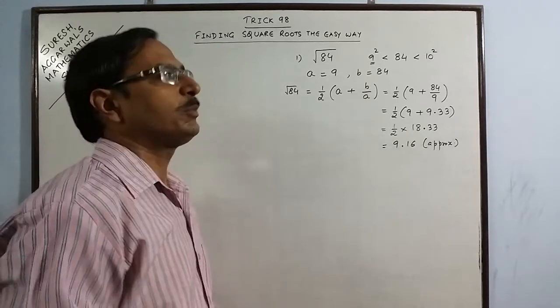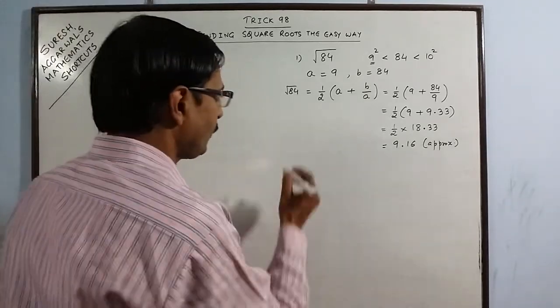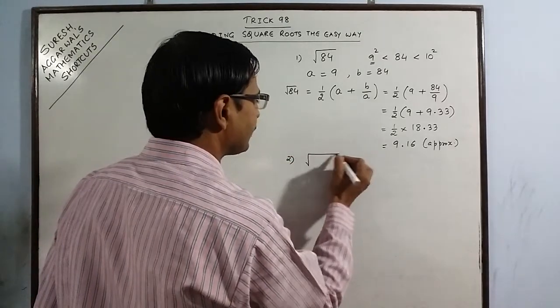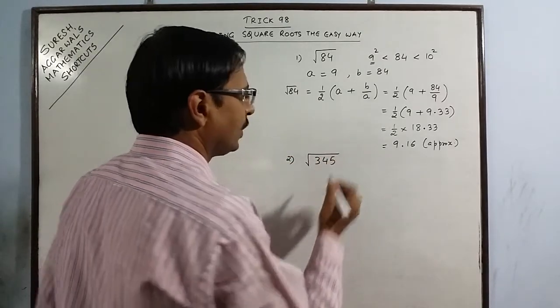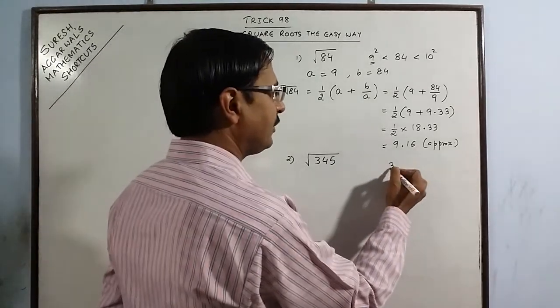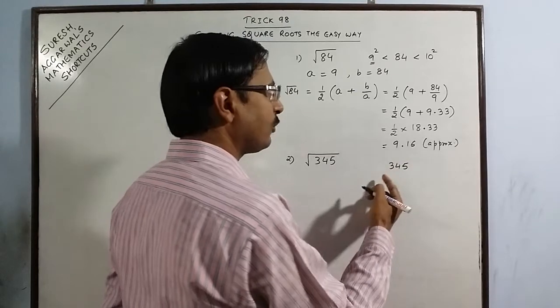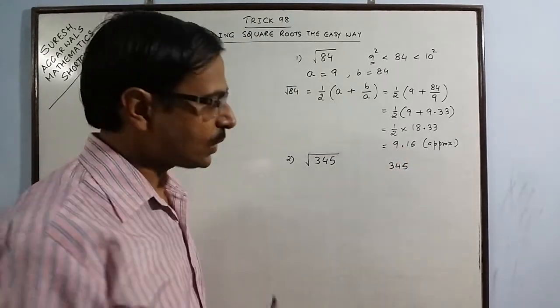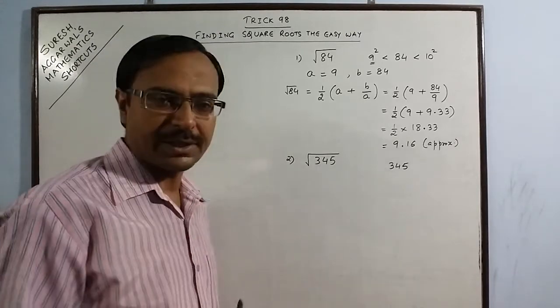Let me take one more example to further understand this method. So here, say we are taking square root of 345 now. Now for finding the square root of 345, we just need to know between which two squares 345 lies. So if you know the squares of numbers up to 30,